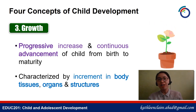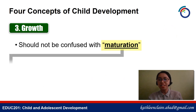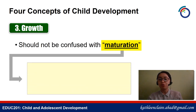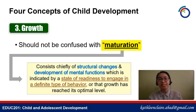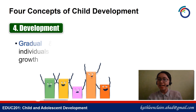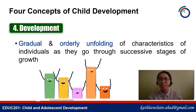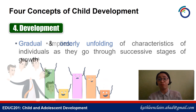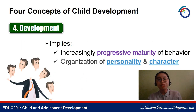Growth is also characterized by increment in body tissues, organs, and structures — for example, the physical changes our bodies undergo during puberty. It should not be confused with maturation, which is part of development controlled by internal growth. Maturation consists chiefly of structural changes and development of mental functions, indicated by a state of readiness to engage in a definite type of behavior, or that growth has reached its optimal level.